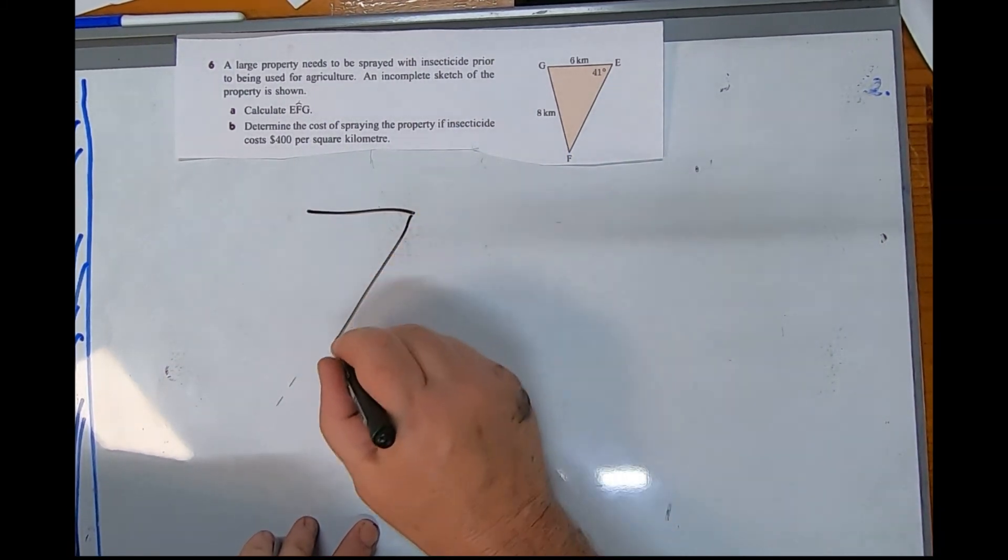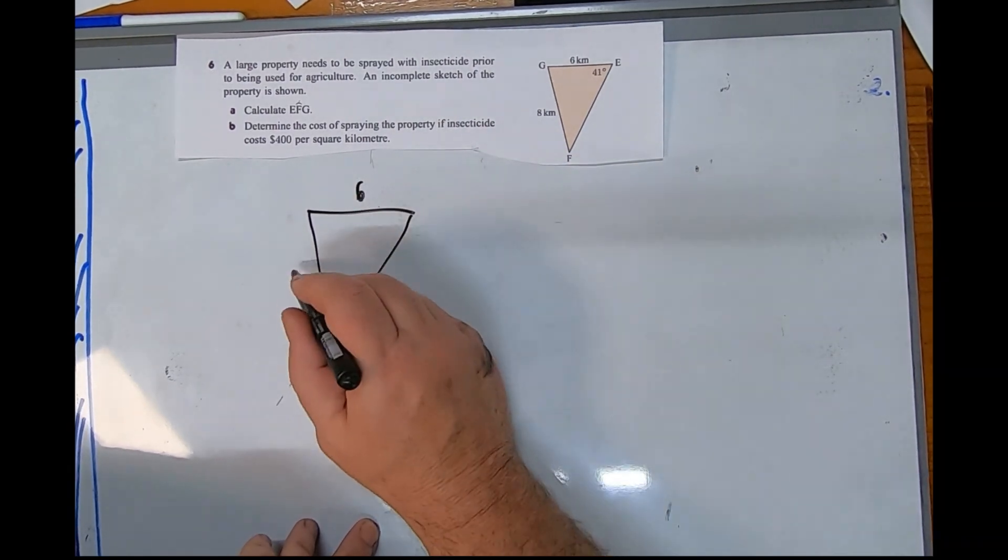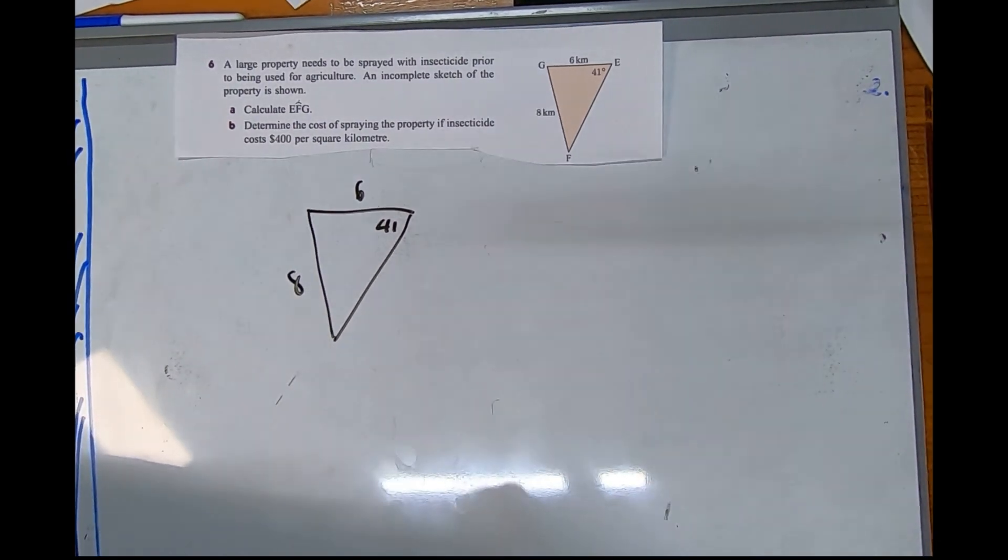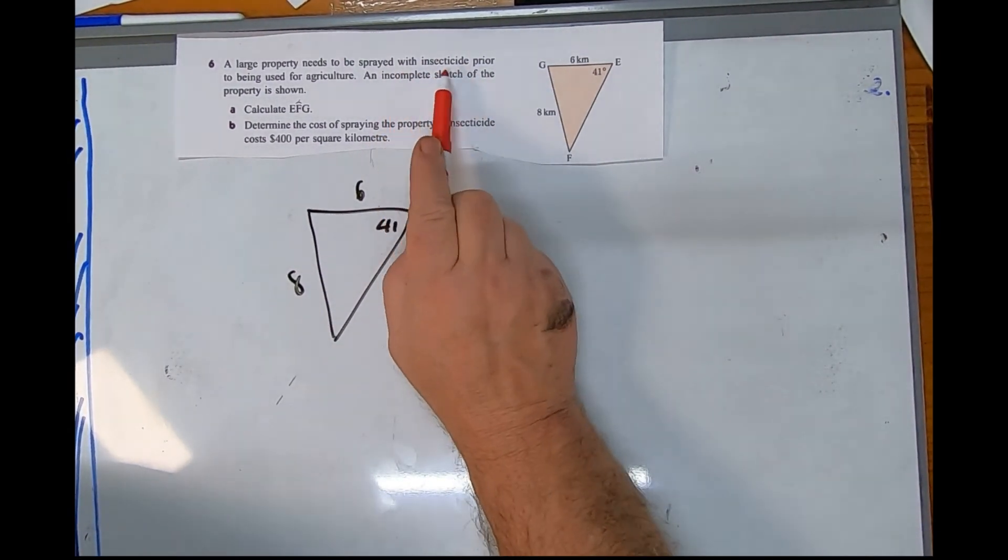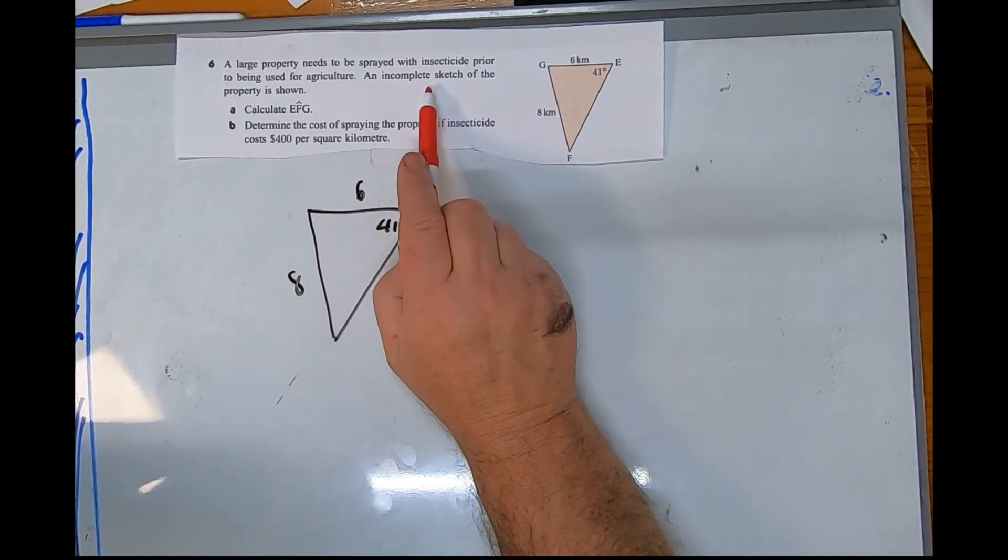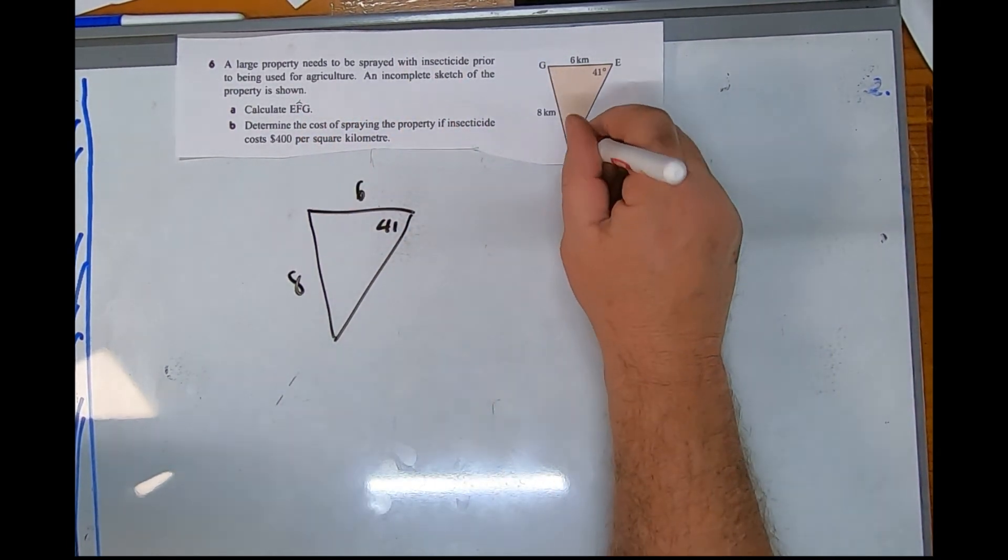Looking your way over here at question six. Draw me a picture because I'm going to put a's and b's all over it. Large property needs to be sprayed. A complete sketch of the property is shown. Calculate angle EFG, so that's this one here.